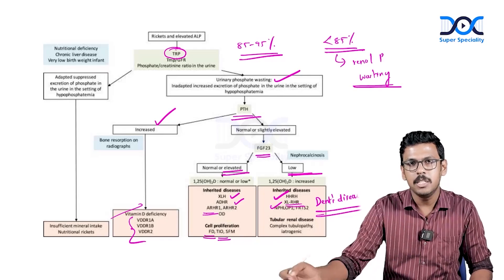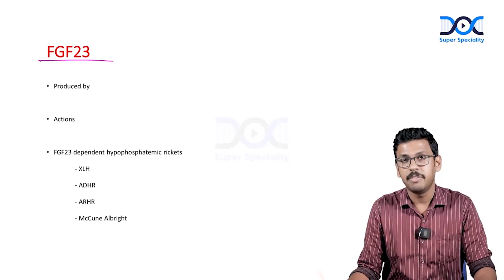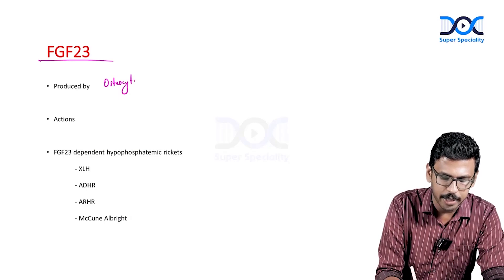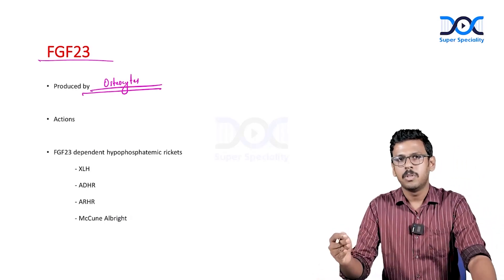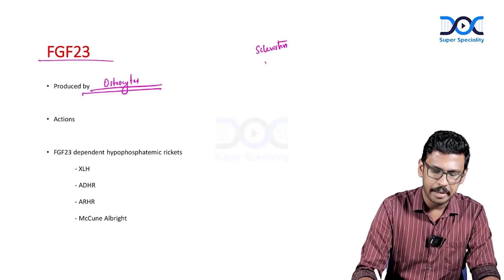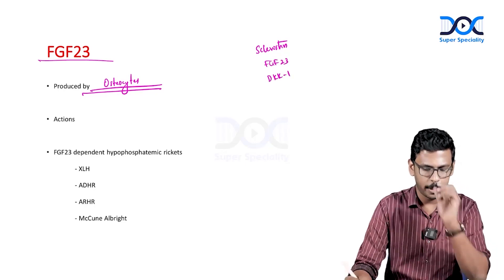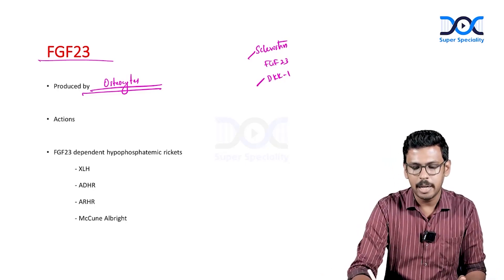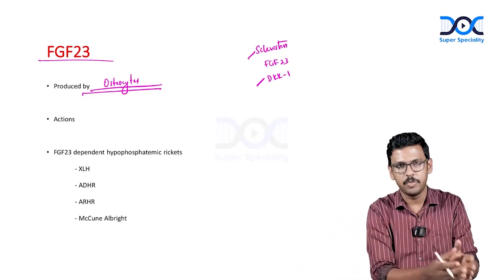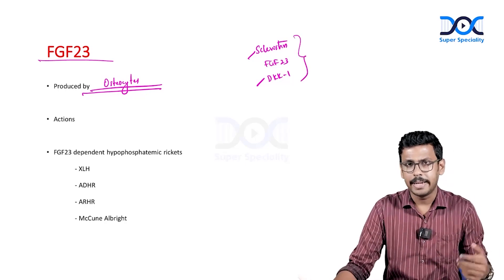FGF23 is produced by osteocytes. So far osteocytes are seen producing three things: sclerostin, FGF23, and DKK1. Sclerostin and DKK1 inhibit WNT signaling, and FGF23 has other significant roles. In smaller amounts, osteocytes can also produce osteoprotegerin and RANK ligand — the majority being produced by osteoblasts. Similarly, FGF23 in smaller amounts can be produced from osteoblasts as well.